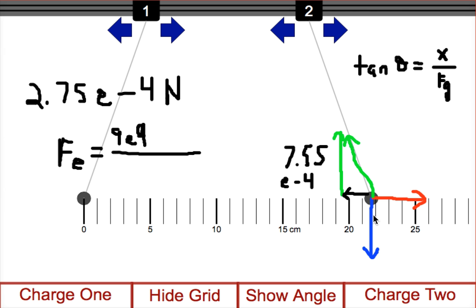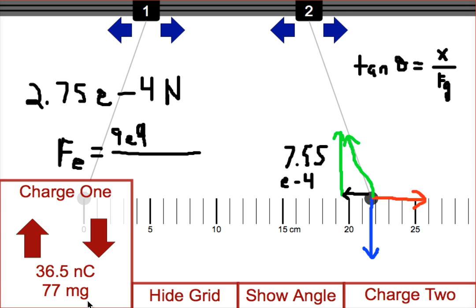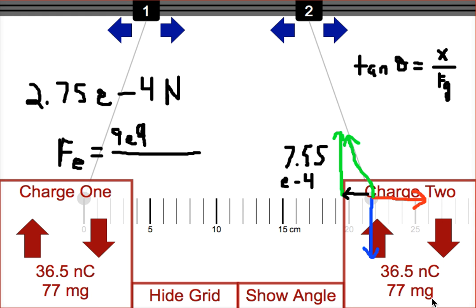So let's see how close we got to our correct answer. So we take 9e to the ninth, multiply by our two charges, 36.5 e to the negative ninth times our other charge, which is also by coincidence 36.5 e to the negative ninth. We divide by the distance between them, which is about 21.8. We make sure we put it in meters and we square it, and we get an answer of about 2.5 e to the negative fourth.